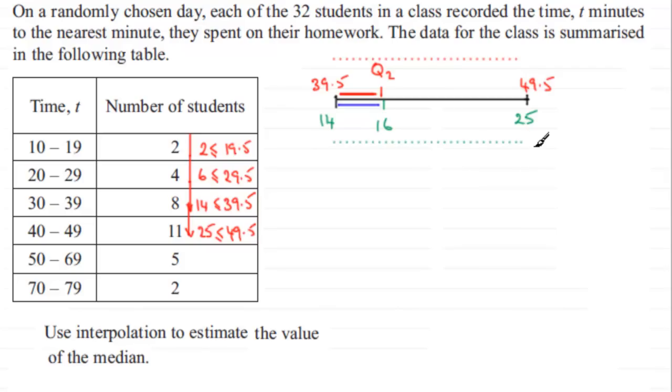So I set up this equation. I say this width, that solid red line which is Q2 minus 39.5, I compare it with the width below it, 16 minus 14. And then that is going to be equal to the width on the top, 49.5 minus 39.5, compared with the width below, 25 minus 14.